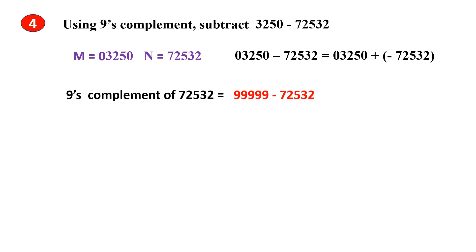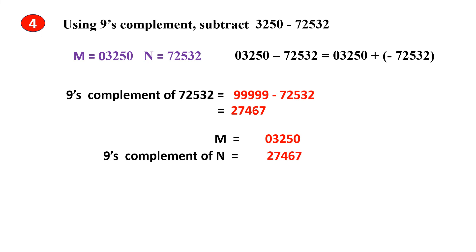The 9's complement of this number is obtained in this way. When you solve this, you get this as the answer — this is the 9's complement. Now you have to add this number with M. When you add these two numbers, you get this answer.